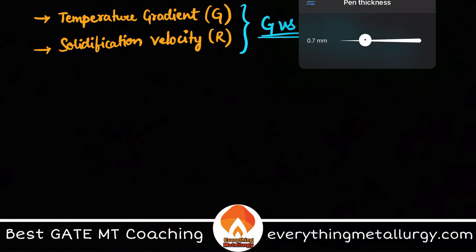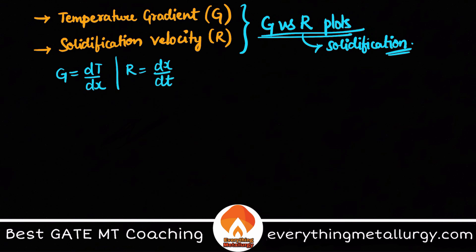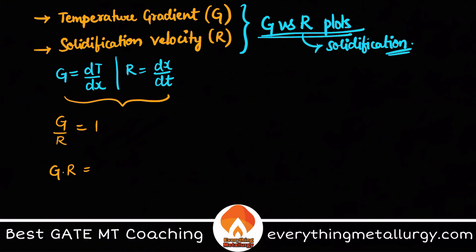Let us understand what G means mathematically. G is dT/dx, the temperature gradient. From G and R we can derive two important quantities: one is the ratio G/R, and the other is the product G×R. G/R is related to morphology — from the G versus R graph you can identify morphology by the slope of the lines.